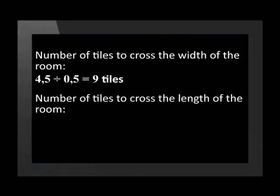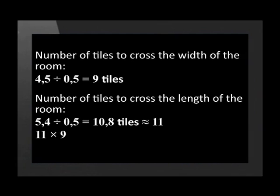To find the number of tiles it takes to cross the length, we divide the length of 5.4 by 0.5. This gives an answer of 10.8 tiles. Since tiles only come in whole numbers, we must round up to 11 tiles. To calculate the number of tiles we need, we multiply 9 by 11, which equals 99 tiles.